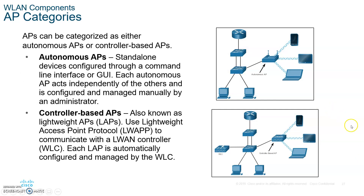There are two categories of access points: autonomous APs, which work alone without a controller, and controller-based APs, which are most typical in enterprise networks like on campus. The controller-based ones use lightweight access points — they don't do anything on their own and can't be directly configured. They must be connected through a wireless controller, which feeds them all the information and configuration they need. We configure the controller, and it sends everything to the lightweight APs.